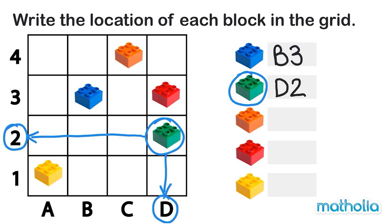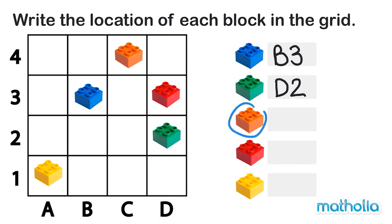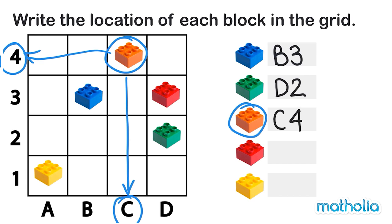Next is the orange block. We can see that the orange block is in column C and row 4. So the orange block is in position C4.